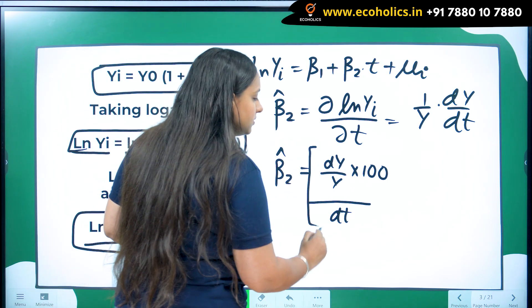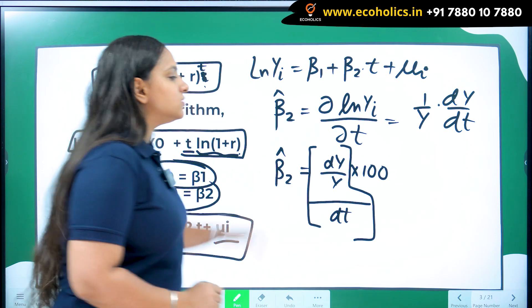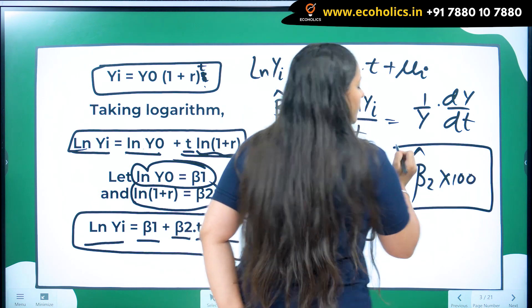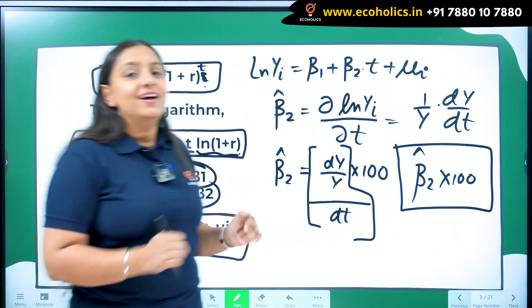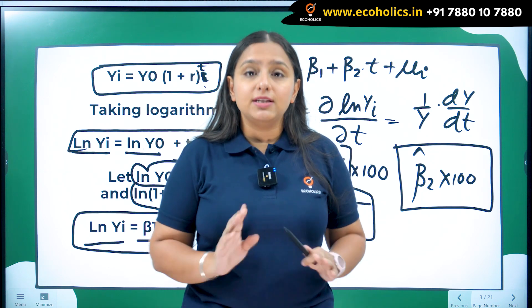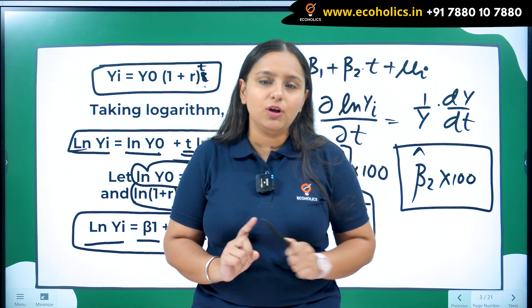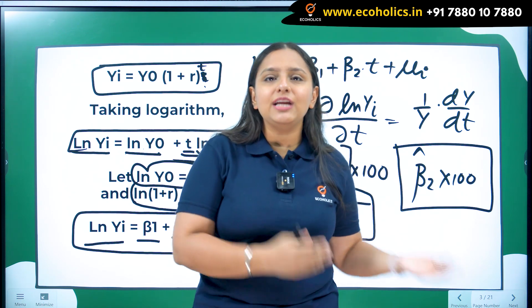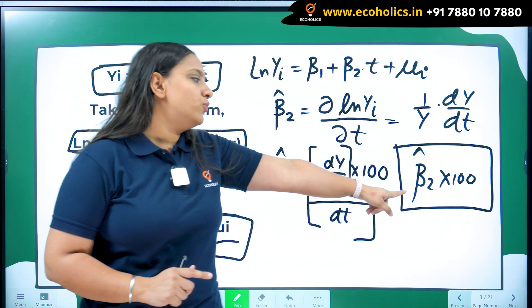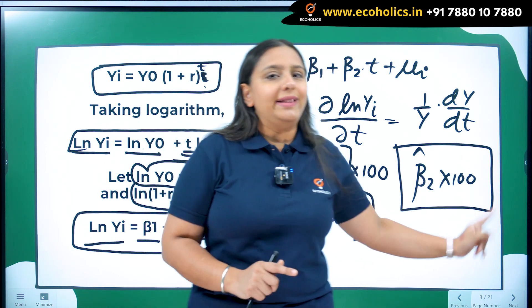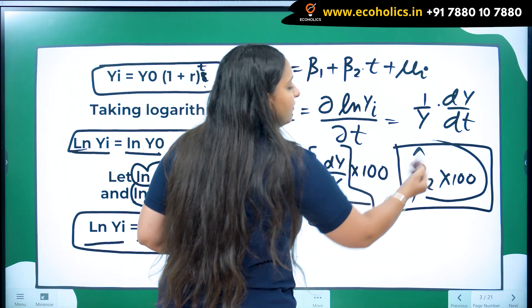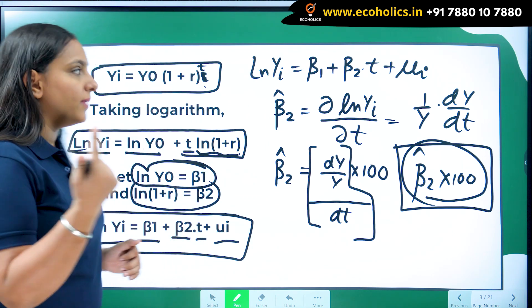To convert the proportionate change in y to a percentage I can multiply by 100, so that the numerator becomes a percentage. Since beta_2 is the quantity in the bracket, whenever I multiply beta_2-hat by 100 I will get the percentage change in y_i. A very important tip: whenever the log is present with the dependent variable in semi-log models and you want the percentage change in y_i due to an absolute change in the explanatory variable, always multiply your slope by 100.